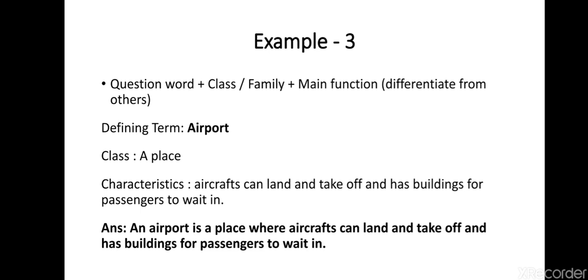See example three. The word to be defined is airport. Airport is a place, isn't it? That is the class. What are the characteristics? Aircrafts can land and take off, and it has buildings for passengers to wait in. Through these characteristics we can differentiate the place airport from other places.